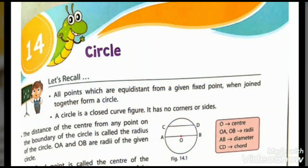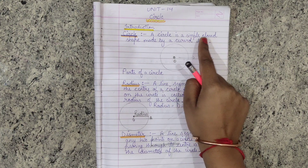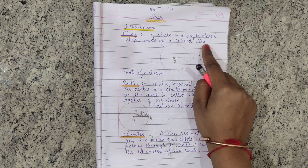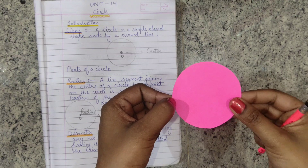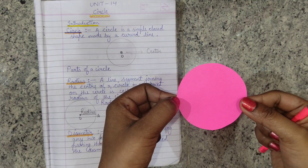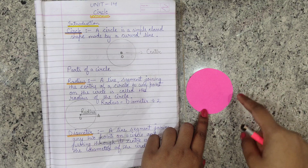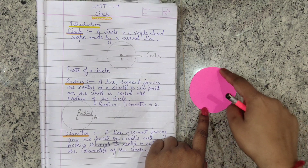Today we will discuss Lesson 14 — that is, the circle. A circle is a simple closed shape made by a curved line. This is a circle made by me. You can see in this figure that there is no corner or no edges — it is a round shape.